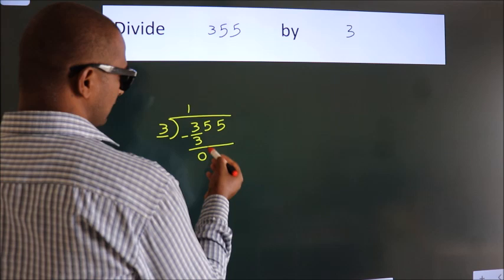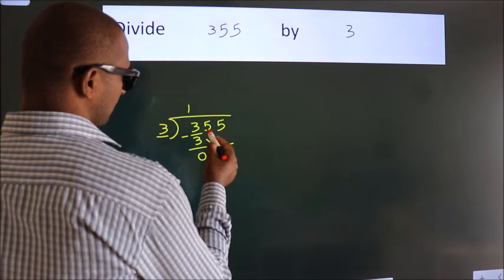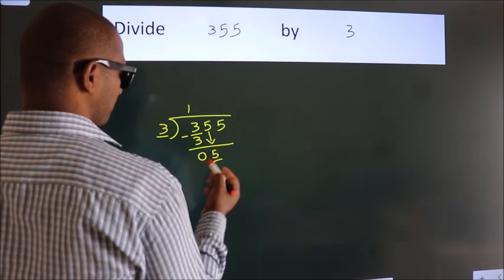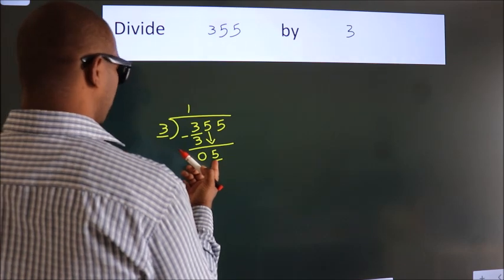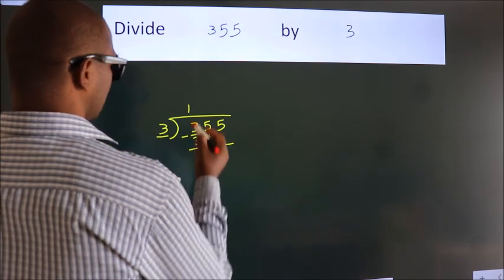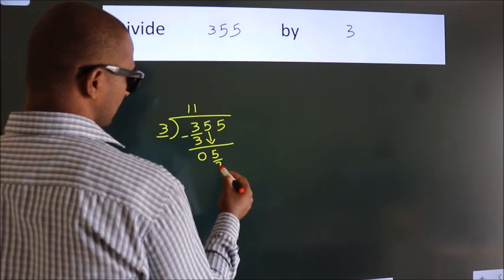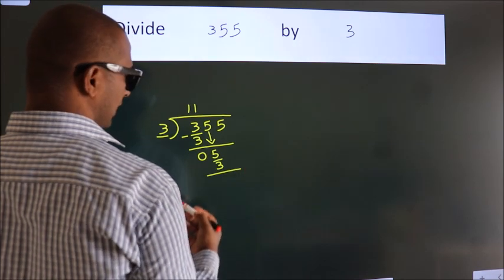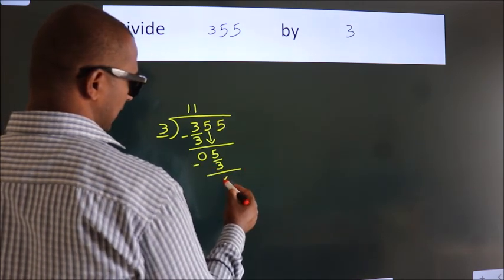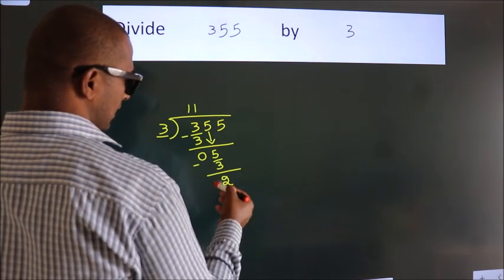After this, bring down the beside number. So 5 down. So 5. A number close to 5 in 3 table is 3 once, 3. Now, we subtract. We get 2.